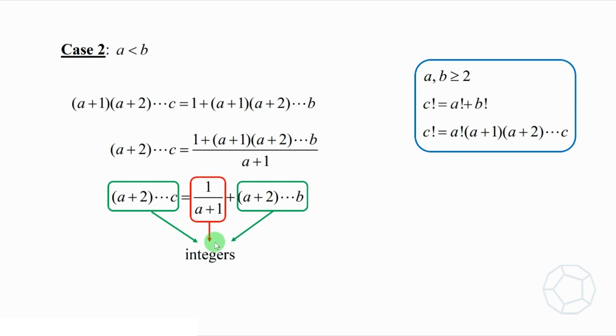Because these two products are integers, therefore 1 over (a+1) is also an integer. So the denominator (a+1) can only be 1. Solving that, a equals 0. Again, it is rejected.